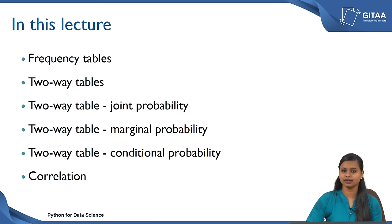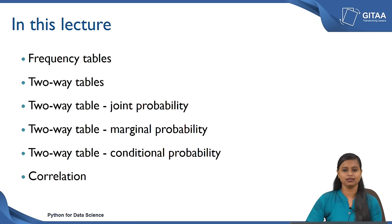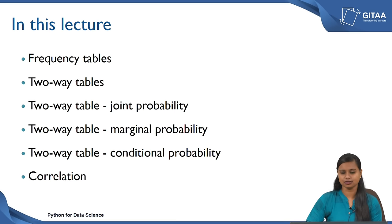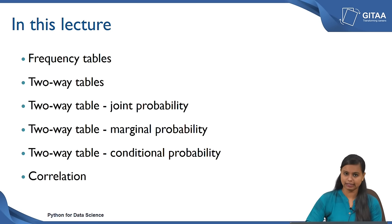We are also going to look at a measure called correlation because all of the points listed above are to interpret or to check the relationship between categorical variables. But we will also have numerical variables in our data frame, in which case if you want to check the relationship between two numerical variables there is a measure called correlation. We will also be seeing in detail about what the correlation measure is about.